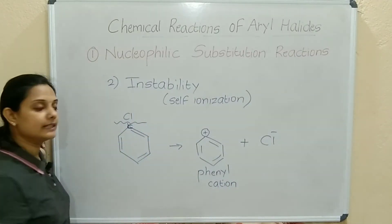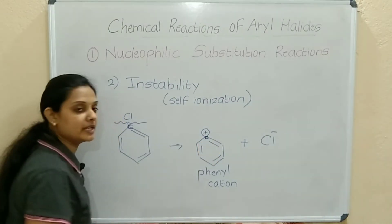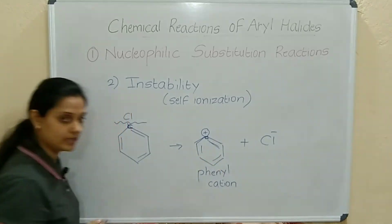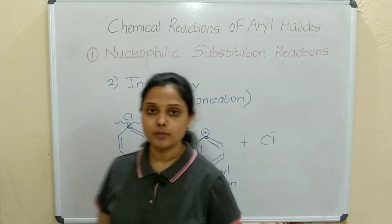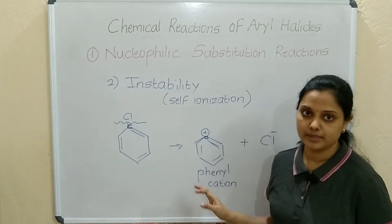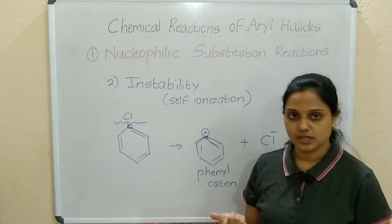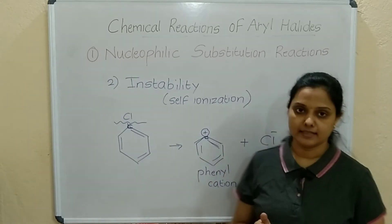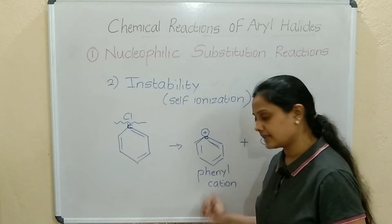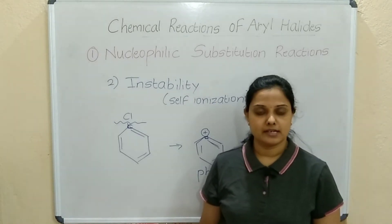In the phenyl cation, the carbon present is making only three bonds — one, two, and three. Carbon's valence is four, but it is making only three bonds, so it is unstable. Because of self-ionization, the phenyl cation is unstable. This is the second reason why nucleophilic substitution reactions do not happen in aryl halides.